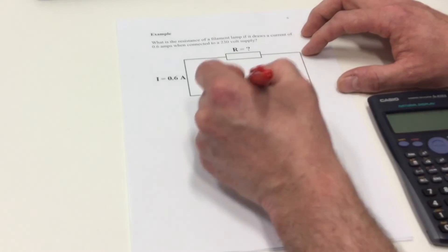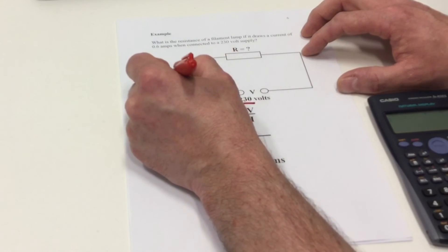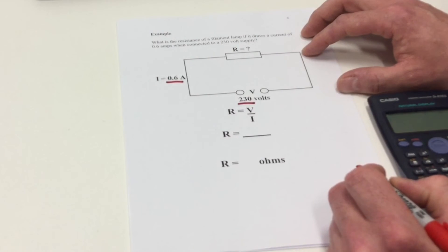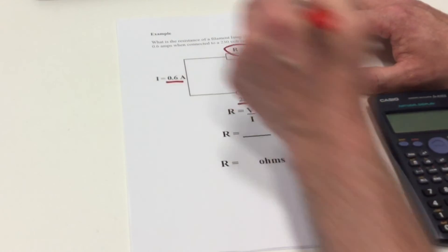So we know our voltage is 230 volts. We know our current is 0.6 Amps and we're trying to find the circuit's resistance.